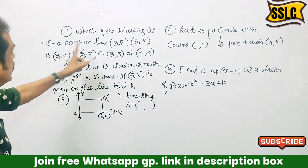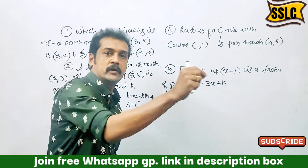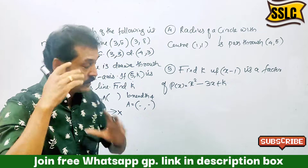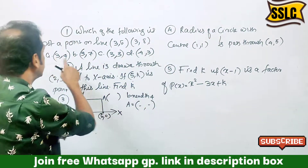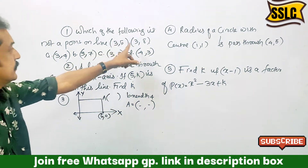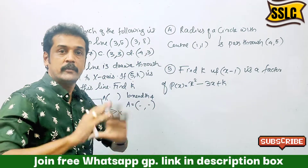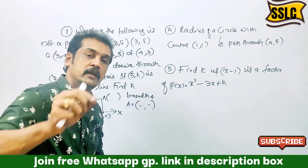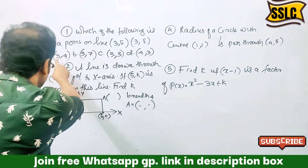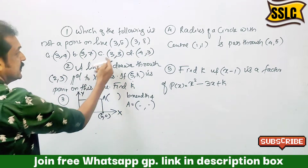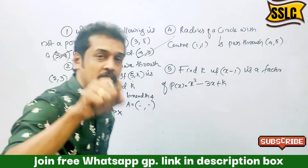Which of the following is not a point on the line 35 and 38? We are going to join the two points, then join the three points. When we join the three points, the three points will join the three planes.